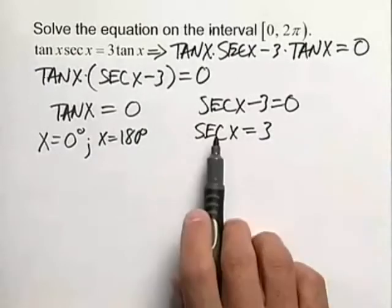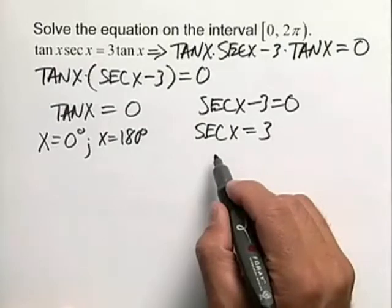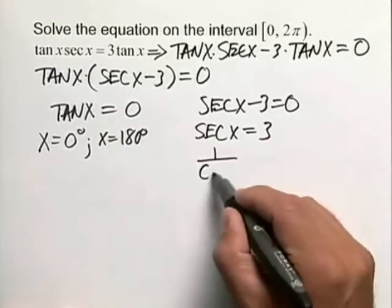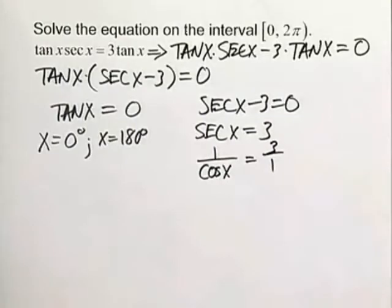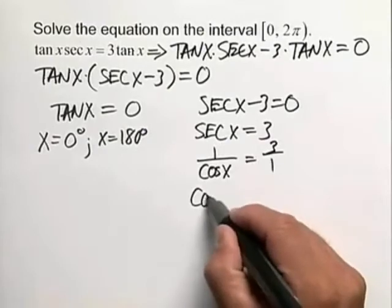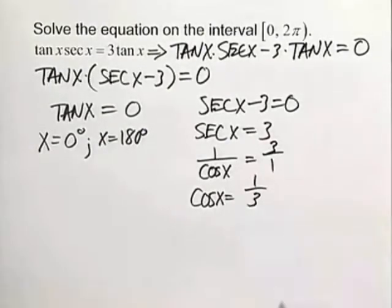We have to remember our reciprocal relationship between the secant of x and the cosine of x. The secant of x can be written as 1 over the cosine of x equal to 3 over 1. Now if you cross multiply and solve for the cosine of x, we obtain the cosine of x as being equal to a positive 1 third.